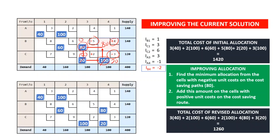Calculating the cost of this revised allocation gives a total cost of 1,260, which is much lower than the cost of the initial solution. You then repeat the algorithm for this new allocation — calculating the improvement indices for all the new empty cells and checking if they are all positive. If they are all positive, you have found the optimal solution. If there is one that is negative, you improve the current solution. You repeat this process iteratively until the current allocation gives only positive improvement indices.